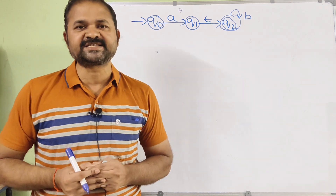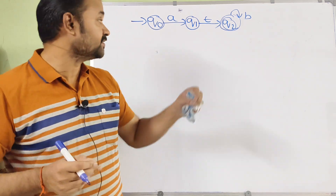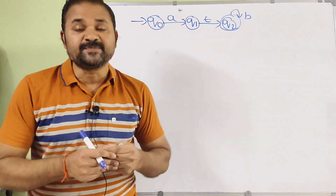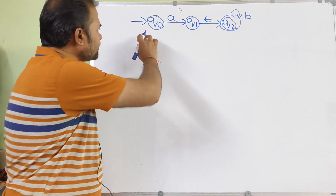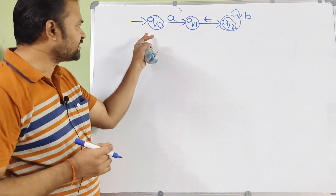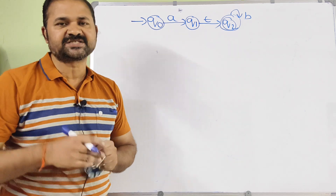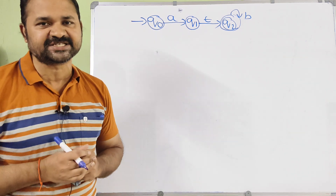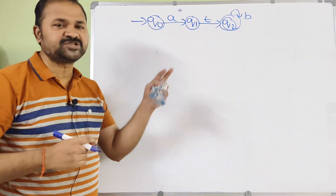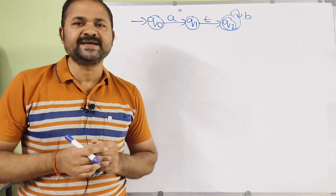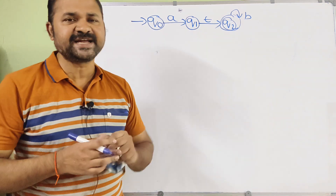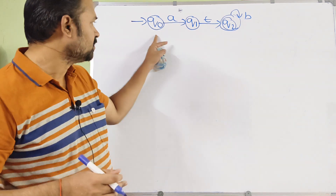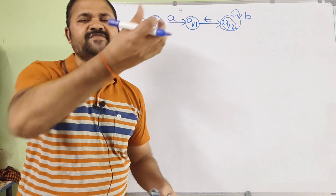In this class we are going to discuss converting NFA with epsilon transitions to NFA without epsilon transitions. Here an NFA is given, and for this NFA with epsilon transitions we have to construct an equivalent NFA without epsilon transitions. There are two steps: the first step is to find the epsilon closure of all the states, and the second step is to calculate the extended transition function of all the states on each and every input symbol.